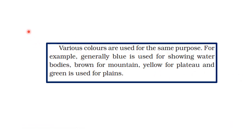Besides symbols, various colors are also used for the same purpose to show features. For example, blue color is used to show all water bodies, brown color is used to show mountains. The color represents height and depth — dark blue means water is very deep, light blue means water is shallower.